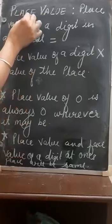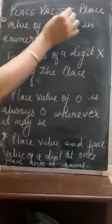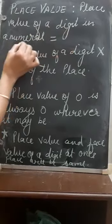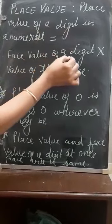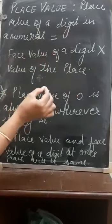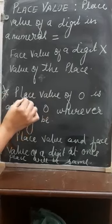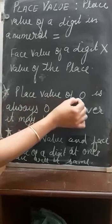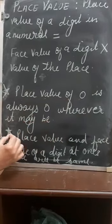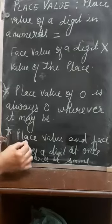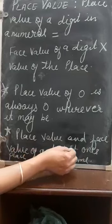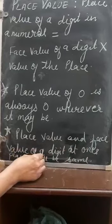Now, place value. The place value of a digit in a numeral is equivalent to the face value of a digit multiplied by the value of the place. There are two most important points: the place value of 0 is always 0 wherever it may be, and the second point — place value and face value of a digit at the ones place will always be the same.